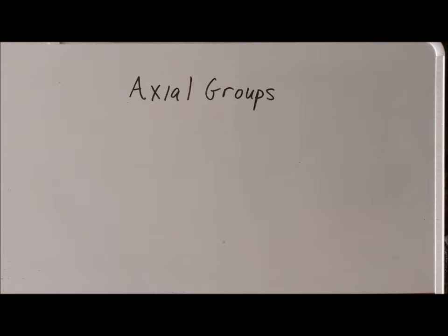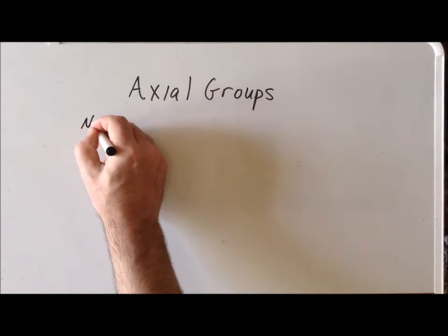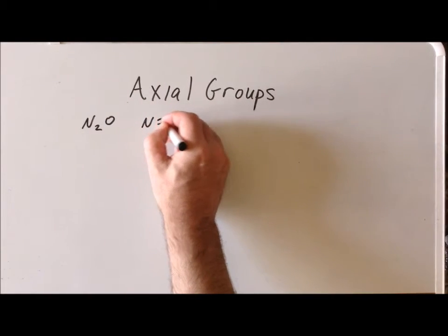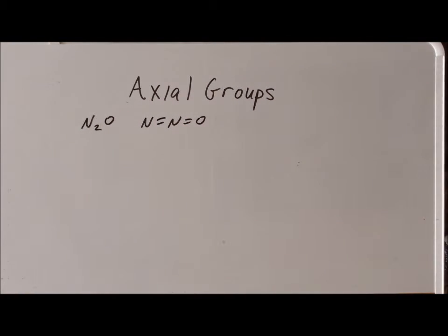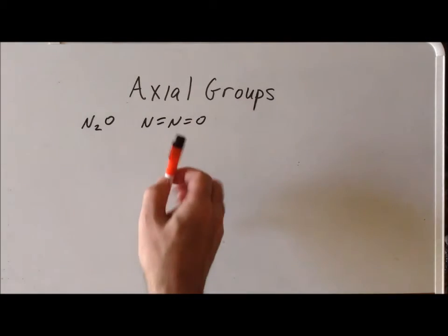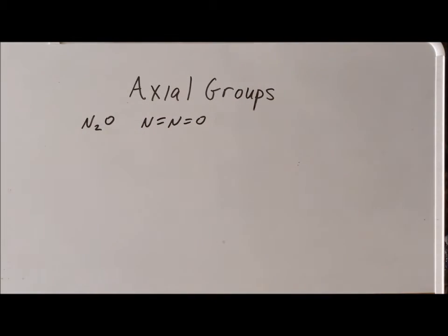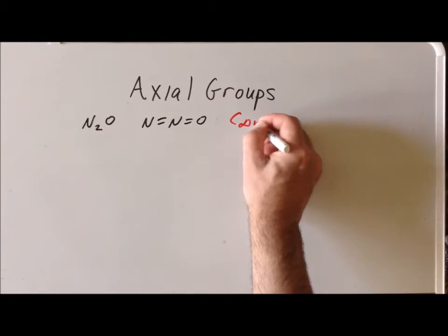We can now examine some examples of polyatomic molecules that belong to the axial groups. One important example is the gas nitrous oxide, N2O. By VSEPR arguments, we recognize this molecule has to be linear. Relative to the center, a mirror plane would reflect nitrogen into oxygen, which doesn't work. So since there are only two possible axial groups, it does not belong to D∞h — we can immediately assign nitrous oxide to the group C∞v.